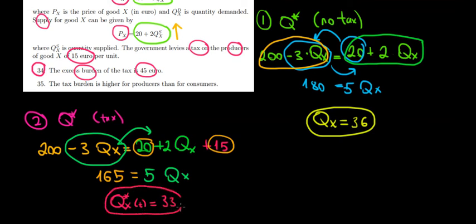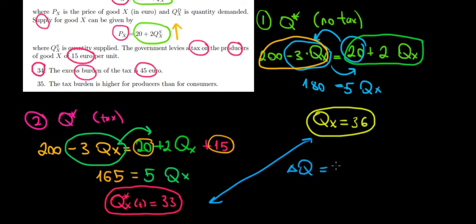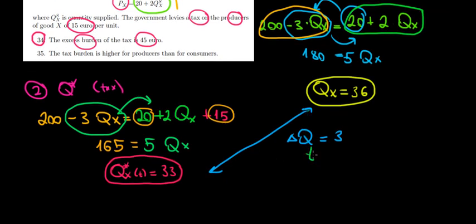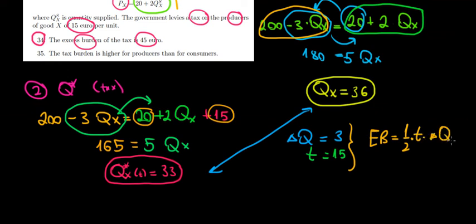We see that there is less quantity traded in the market because of this tax, since the price is perceived as too high by consumers. The change in quantity is 3 units — from 36 we went down to 33. So the change in quantity in the market equals 3 units, and the tax equals 15 euros.